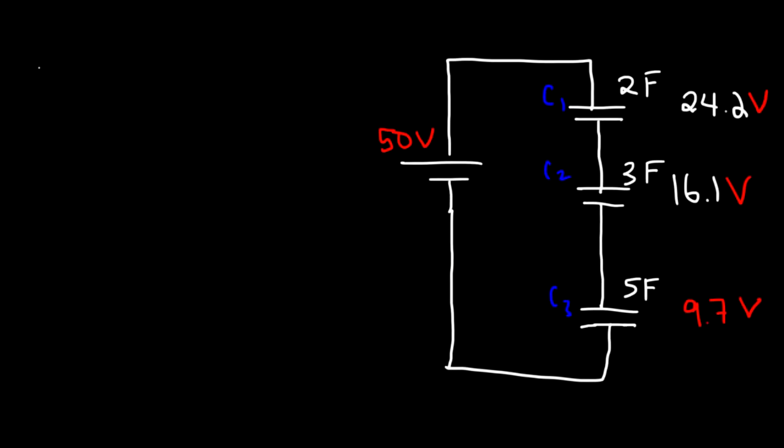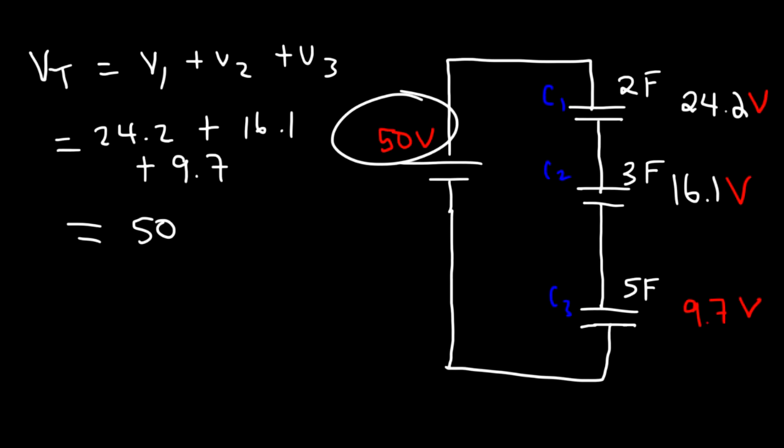Now, notice that the total voltage is equal to V1 plus V2 plus V3. So if you add these values, you should get 50 volts, which is equal to the voltage of the battery. That's how you know if your answer is correct. It has to agree with one another. The sum of these three values has to equal the battery's voltage.